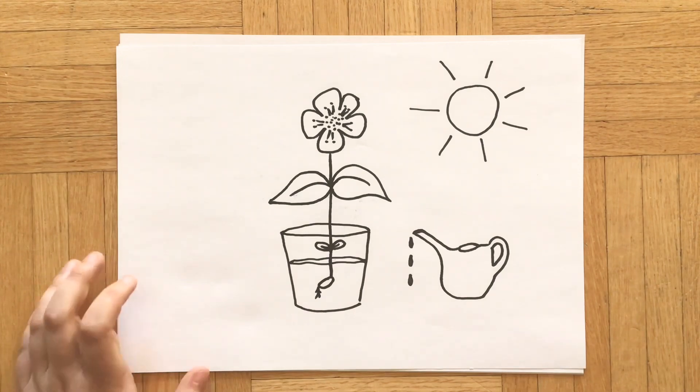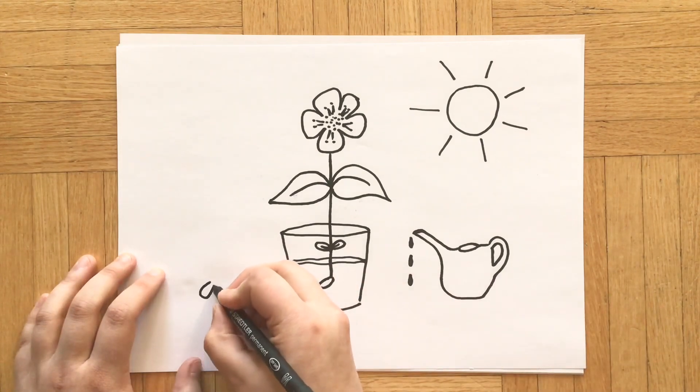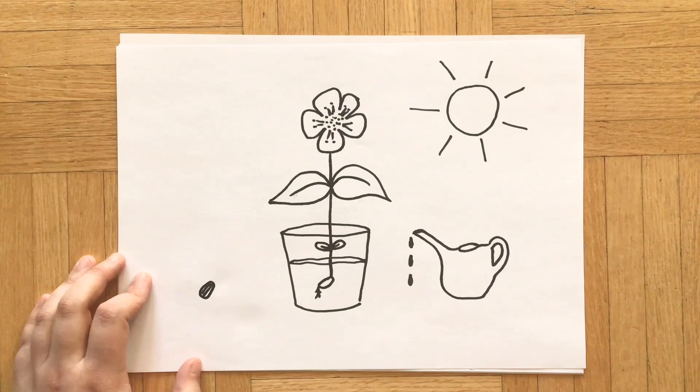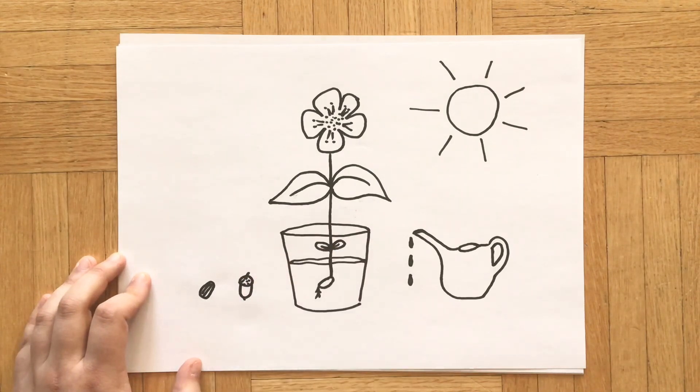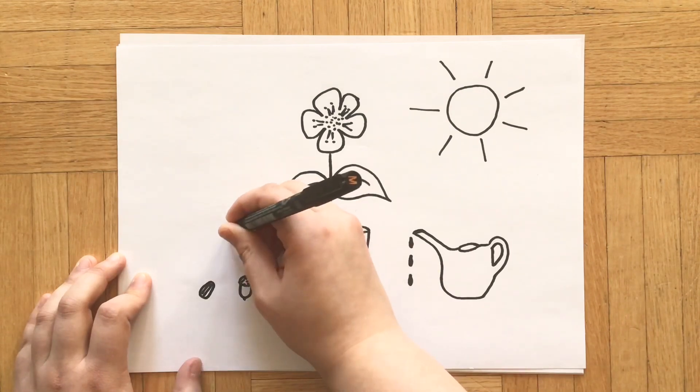Different plants have different kinds of seeds. A sunflower has a stripey one. An acorn is a seed of an oak tree.